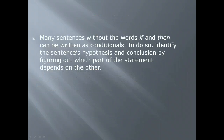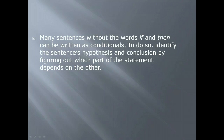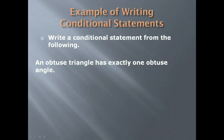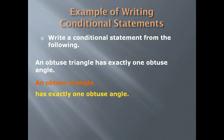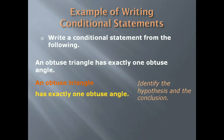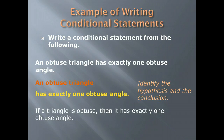Many sentences without the words 'if' and 'then' can be written as conditionals. We just need to identify the hypothesis and conclusion by figuring out which part of the statement depends on the other. For example, 'An obtuse triangle has exactly one obtuse angle.' The first part talks about an obtuse triangle, and it has one obtuse angle. So the conditional form is: if a triangle is obtuse, then it has exactly one obtuse angle.